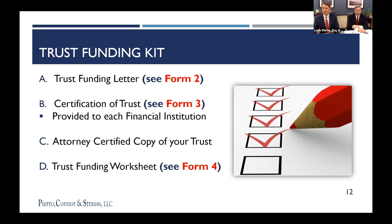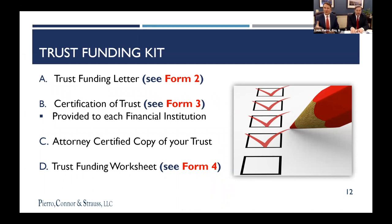When you go to a bank or brokerage, you're going to need to show some documentation: how is this trust configured, who are the trustees, what are the vital terms of the trust? We provide what's called a certification of trust. You would take that right to the bank, hand it to the banker, and they would have all the terms needed to open up that trust. The certification of trust is Form Number Three — an attorney-certified copy of your trust.